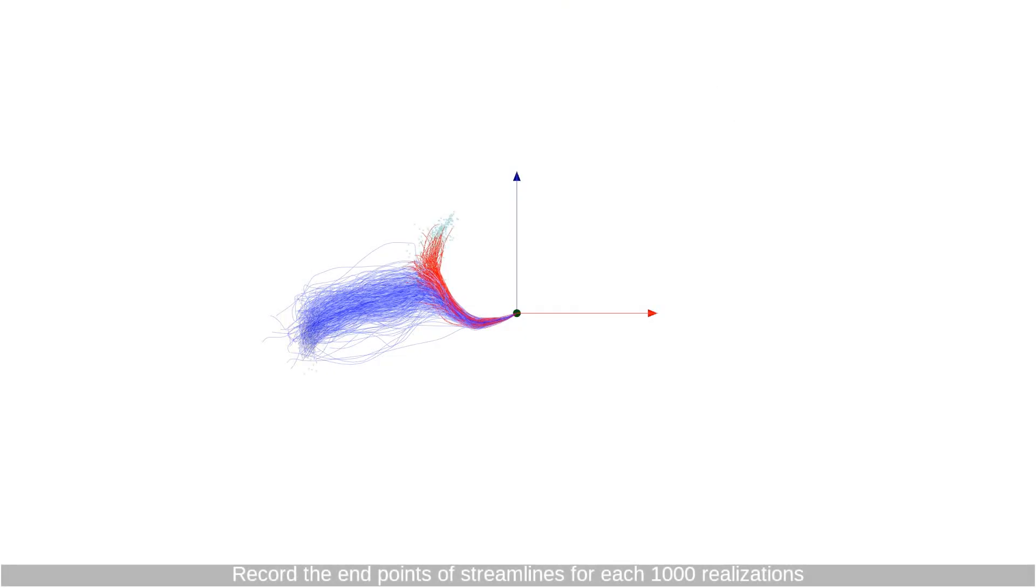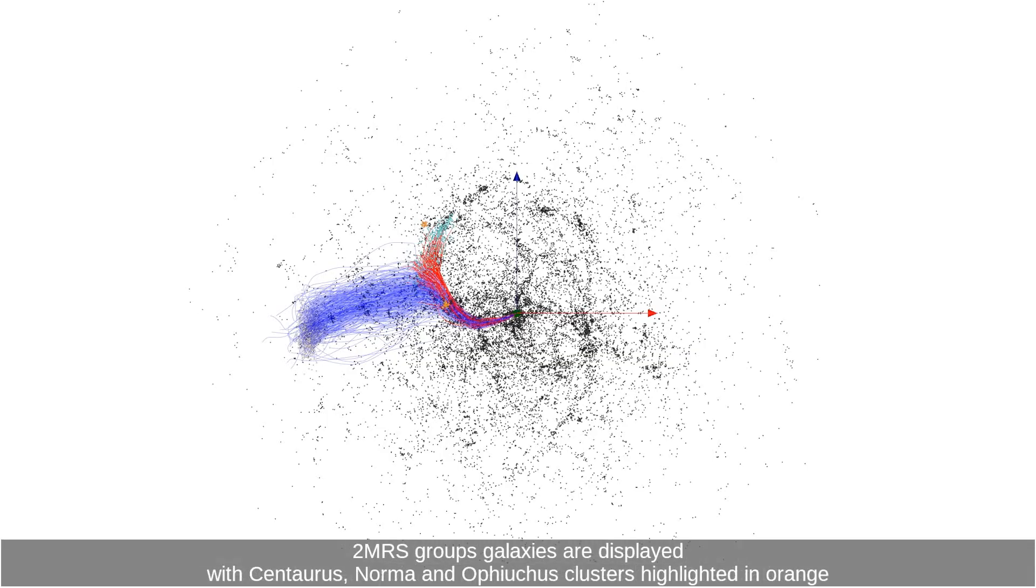Record the endpoints of streamlines for each 1,000 realizations. 2MRS groups of galaxies are displayed with Centaurus, Norma and Ophiocos clusters highlighted in orange.